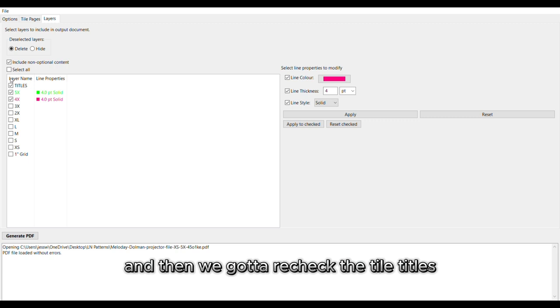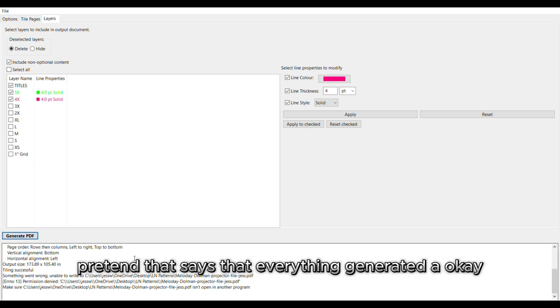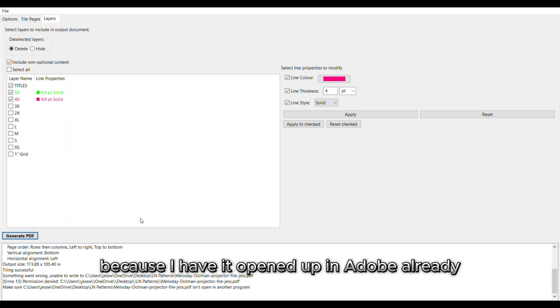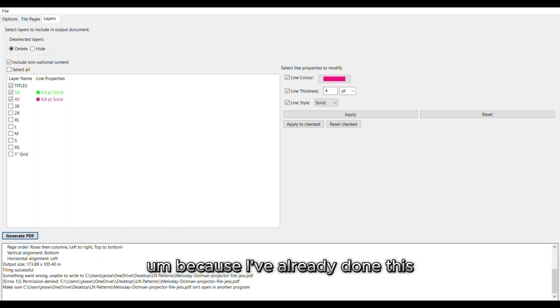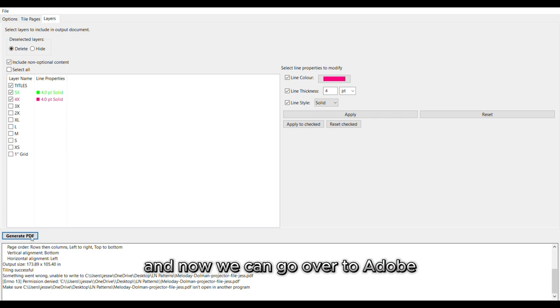This way we've got both of our sizes in two different colors. And then we've got to recheck the tile titles tab or box so that we have all of our labels. Otherwise it won't work. And then we generate. It says that it's wrong because I have it opened up in Adobe already because I've already done this. But just pretend that everything went smoothly. And now we can go over to Adobe and get our pattern cutting.